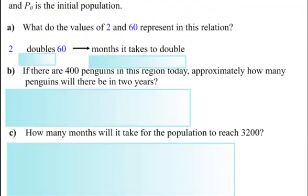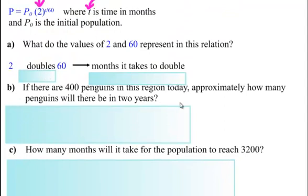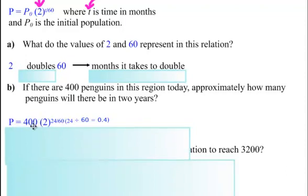Now, if there are 400 penguins in this region today, how many penguins will there be in two years? Well, first of all, they've told us 400 penguins in this region today. So the 400 is going to go where the P0 is. That's the initial population. And in two years, well, two years is 24 months. So let's see how that could all be written up. So the 400 goes right there. The 2 is still there. The 24, 2 years is really 24 months, and it goes right there, over 60.